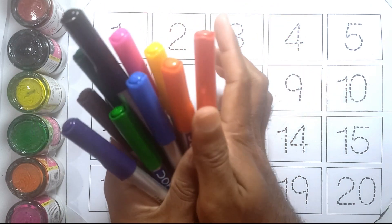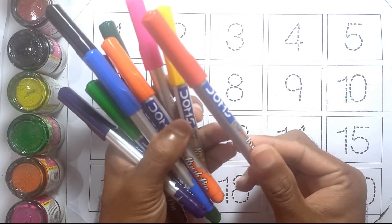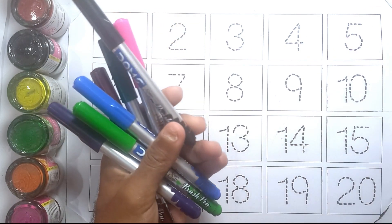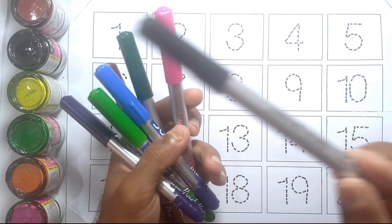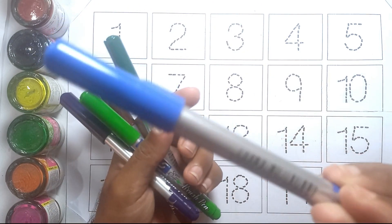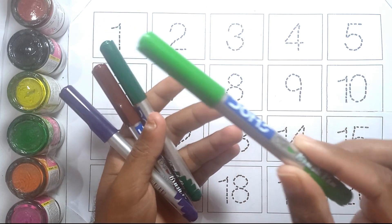This is our color. This is red color, yellow color, orange color, black color, pink color, blue color, light green color.